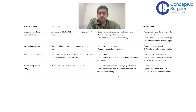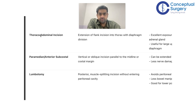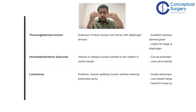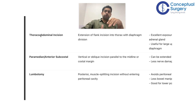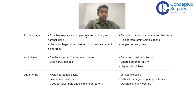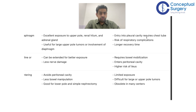The thoracoabdominal incision extends the flank incision into the thorax with division of the diaphragm. It is superb for exposure of the upper pole, renal hilum, and large upper pole tumors or involvement of the diaphragm, but it is extremely invasive. Entry into the pleural cavity requires a chest tube post-operatively, and there is a significant risk of respiratory complications. At some centers, robotics is used instead for cases like supracardiac tumor thrombus.